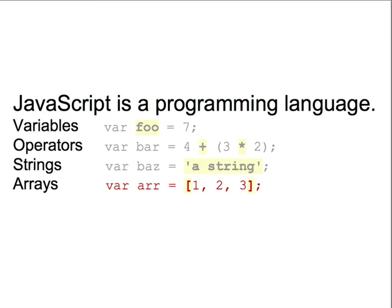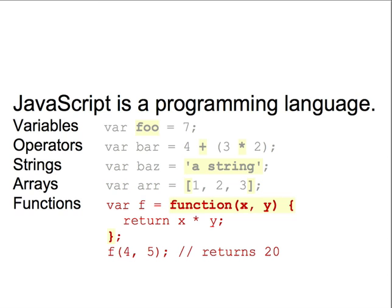JavaScript has arrays for storing a sequence of values. Here we're creating an array with 3 values and assigning it to a variable called r. JavaScript has functions as well, which allow us to save a bit of code that we can reuse. Here we're creating a function that takes 2 arguments and returns their product. We assign our function to the variable f. If we call the function with the value 4 and 5, for example, we'll get 20 as the resulting value.